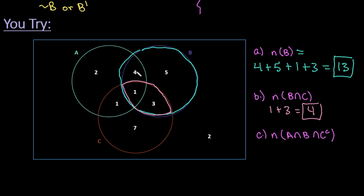And then the last one that we have is we're looking for the overlap of A and B, but we're eliminating the part that falls in C, so we're just looking at the 4.